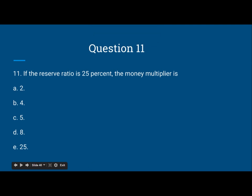So let's move on to question 11. If the reserve ratio is 25 percent, the money multiplier is: A, 2; B, 4; C, 5; D, 8; or E, 25.